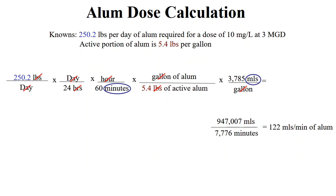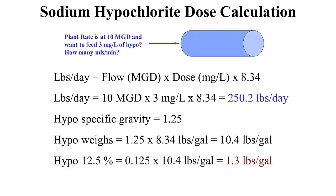That achieves a dose of 10 milligrams per liter at a plant operating at 3 million gallons per day. Here's another example for feeding sodium hypochlorite, or hypo, at a dose of 3 milligrams per liter at a plant operating at 10 million gallons per day. Following the same procedure, we get the same feed rate of 250 pounds per day. This hypo has a specific gravity of 1.25; multiplying by 8.34, a gallon of hypo weighs about 10.4 pounds. The hypo is 12.5%, so 0.125 times 10.4 shows the active ingredient is 1.3 pounds per gallon.